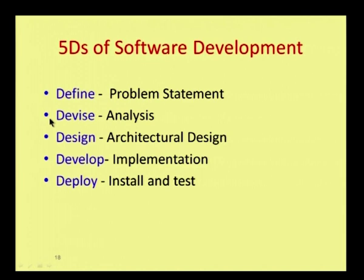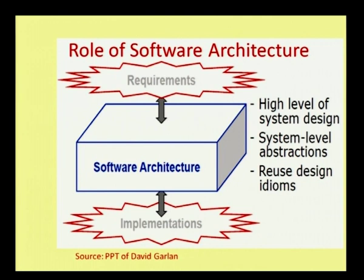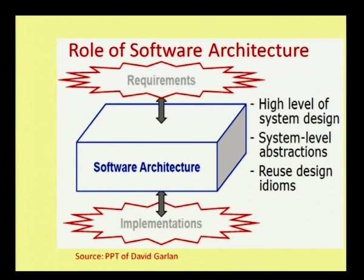Coming to software architecture, you should know the role of software architecture. Referring to this diagram, based on David Garland who contributed to software architecture: you have requirements which need to be implemented. The software architecture maps requirements to implementation. In other words, requirements are defined and you provide a solution by means of software architecture so that it is possible to implement using computers. Software architecture is a high-level system design that provides system-level abstractions. The main advantage is that you can reuse design idioms.